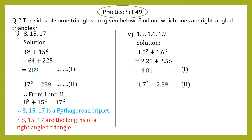So we can write: 1.5, 1.6, 1.7 is not a Pythagorean triplet. Therefore, 1.5, 1.6, 1.7 are not the lengths of the sides of a right angle triangle.